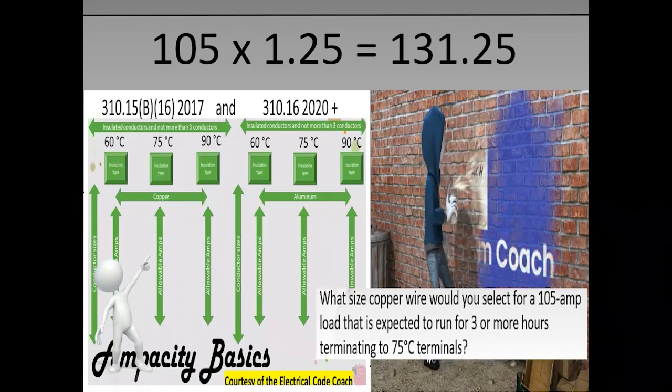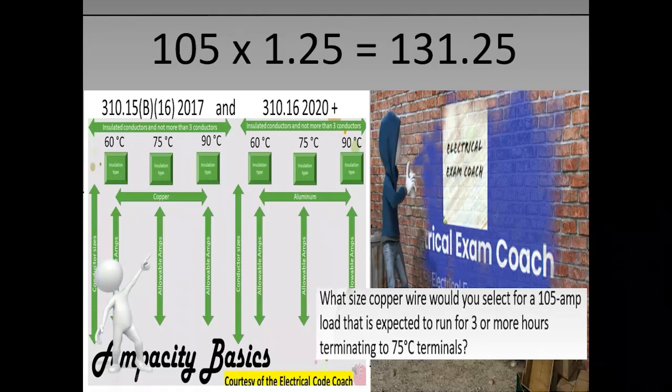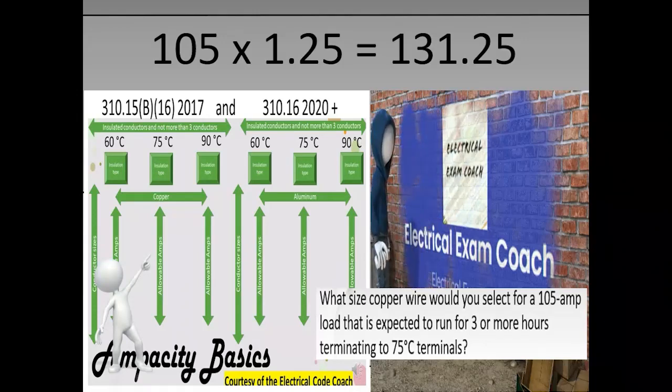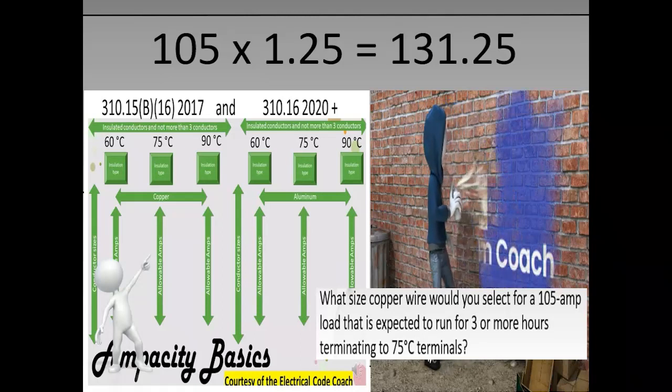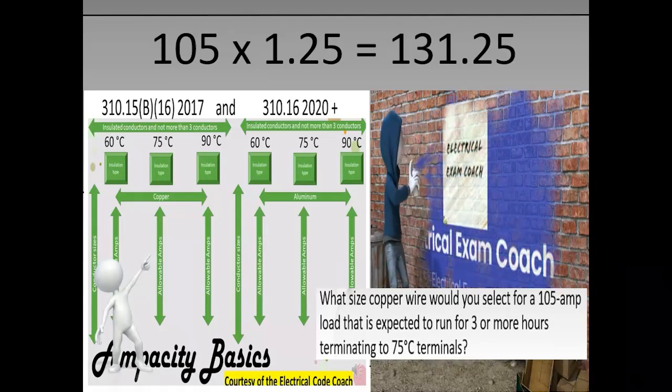We did the 125% because it's a continuous load. Then we're going to head to our primary ampacity table. We're going to choose from the 75 degrees C column in this case because it states that we're terminating to 75 degrees C terminals.